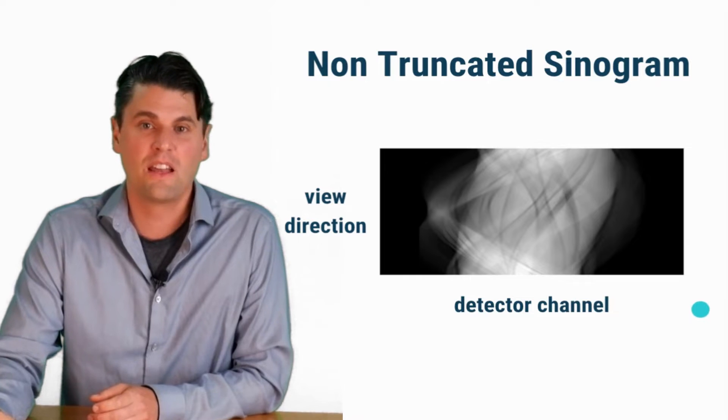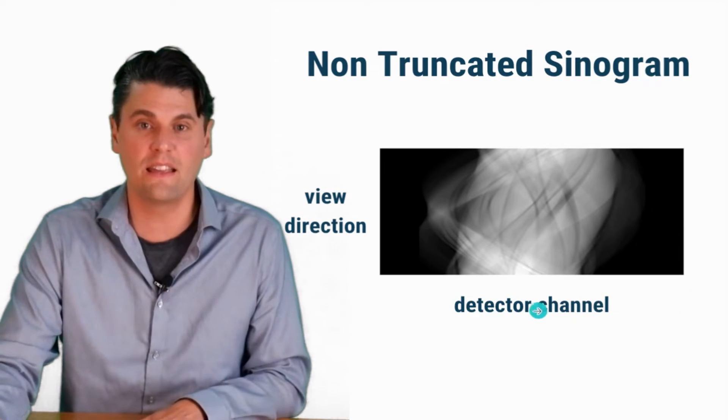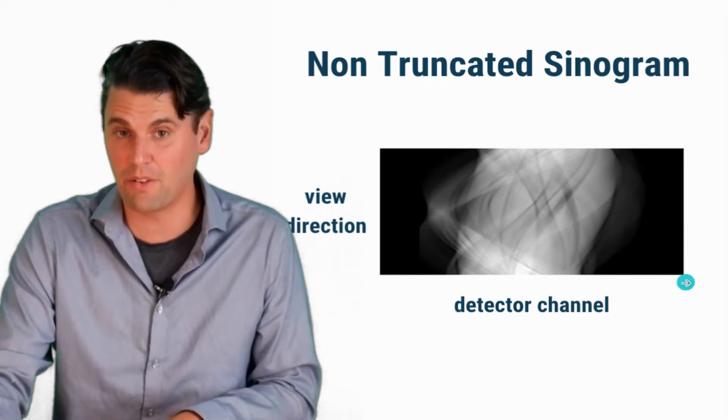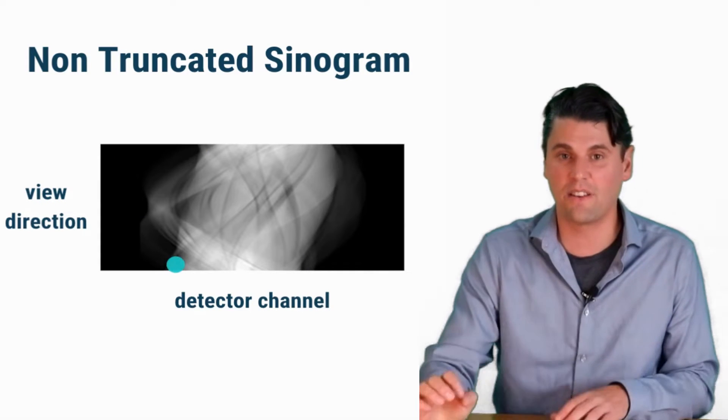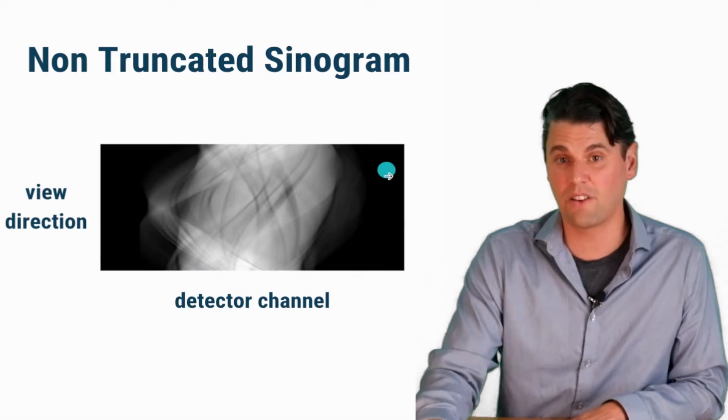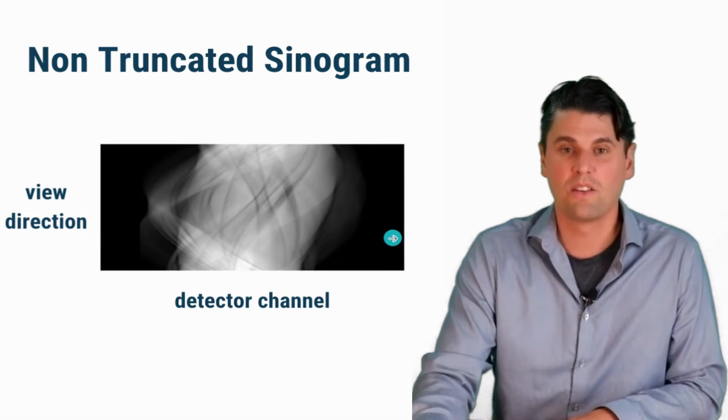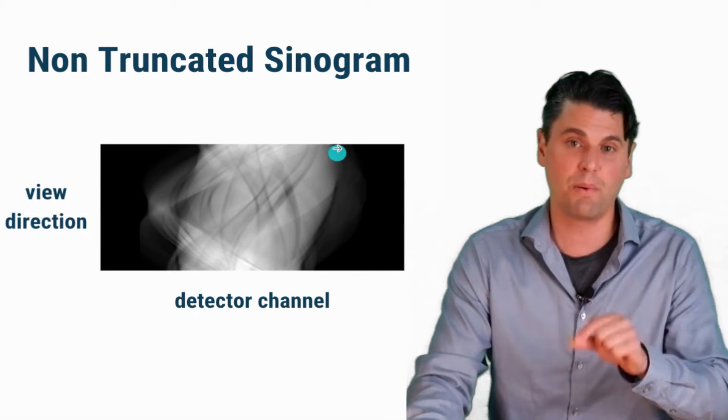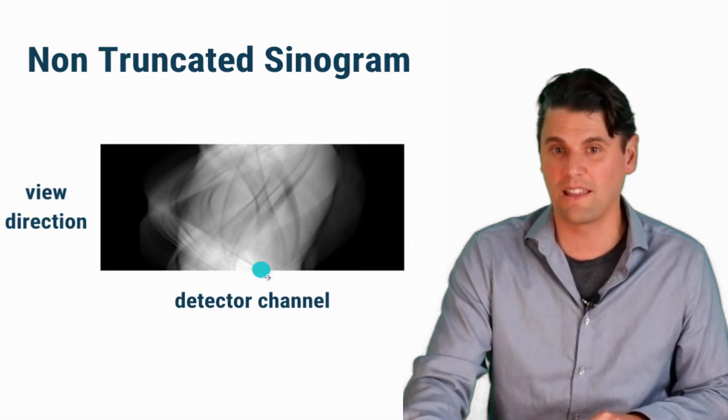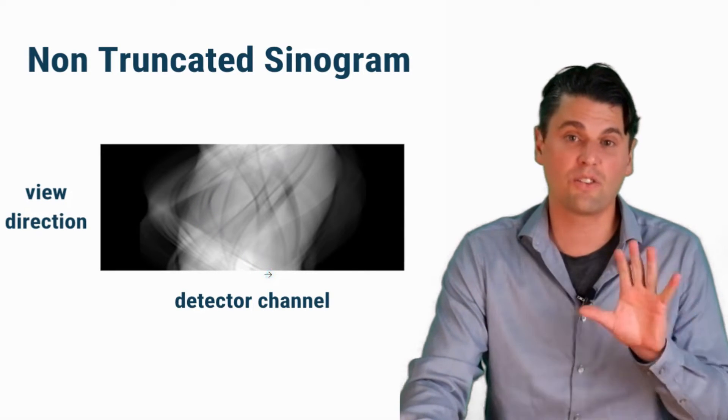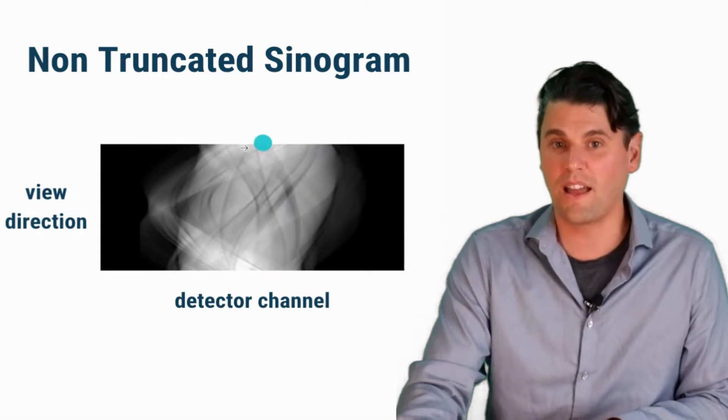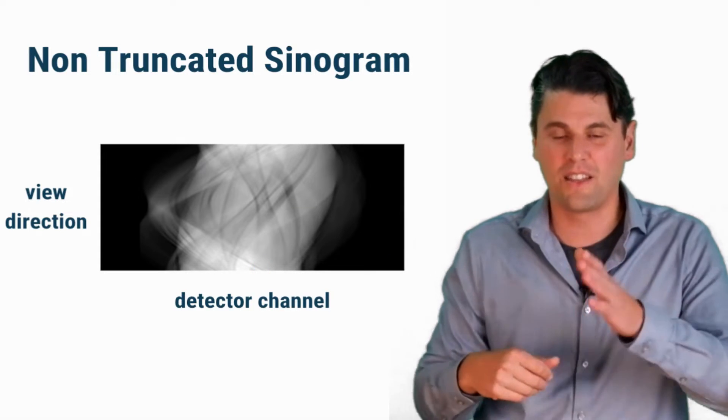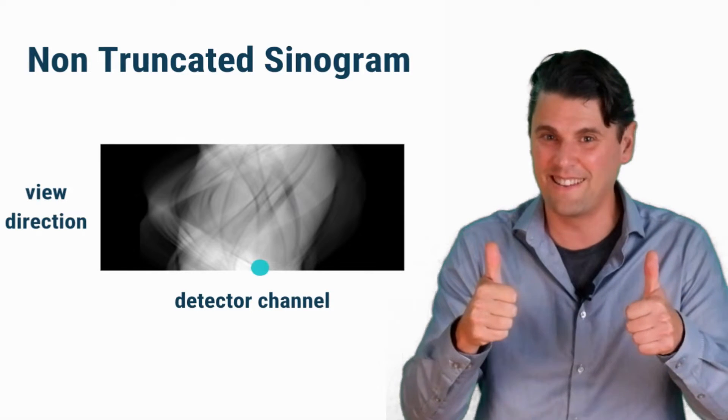See our video on filter back projection if you're not familiar with what the data looks like in CT. In general, if you look at the data, we're talking in this direction about the detector direction. And then if we look at the detector data for all the views in this direction here, we get something called a sinogram. In general, the features in the sinogram, if you have one point in the image space, it's going to trace out a sinusoid in this sinogram space. In this case, there's no data truncation. So all the sinusoids you can see are complete. There's no sinusoids that stop. So this is the good case for the data.